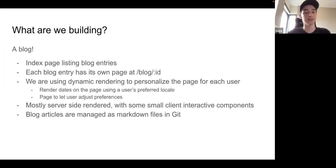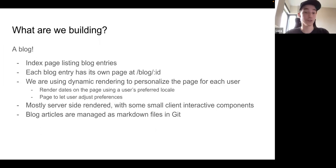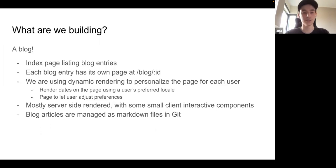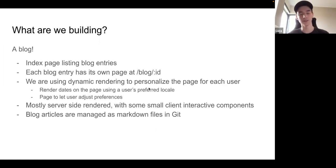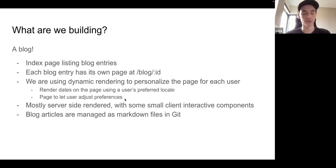What are we specifically building? We're going to be building a blog. This blog is going to have an index page which lists all the blog entries, and a page for each blog entry. We're going to use some dynamic server-side rendering to personalize the page for each user — specifically, rendering dates using the user's preferred locale. So if a user is from Italy, it'll render dates in the Italian style; from the UK, in English UK style; in the US, month first. We're also going to have a page to let the user adjust these preferences.